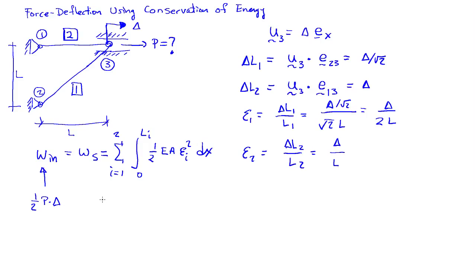I can now go back and write down my strain energy, or stored energy. One-half AE, so for bar 1, I have delta over 2L squared times the length of bar 1, which is square root of 2L, plus one-half AE times the strain in bar 2, that's delta over L squared, times the length of bar 2, which is L. And that's all equal to one-half P delta.